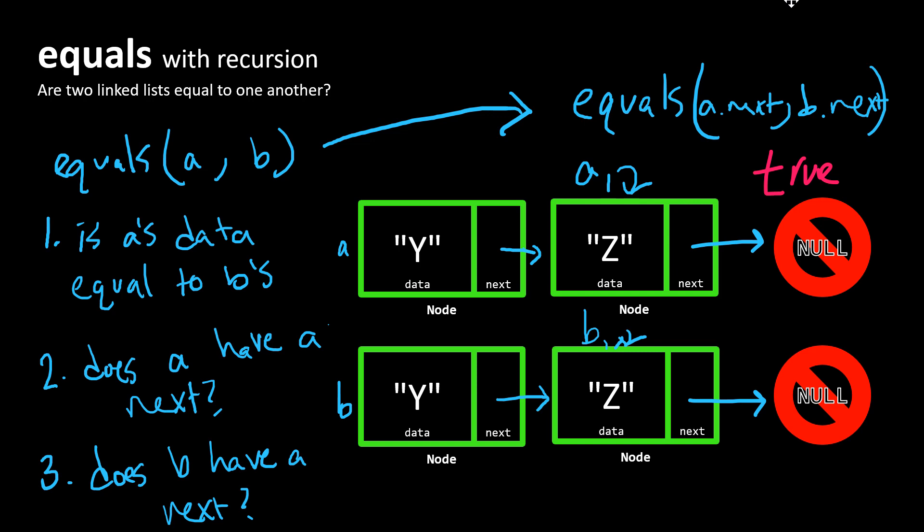And so what this is going to do is once we, as we're moving through a list that's longer than just two nodes, equals is going to continue calling itself on sublists.